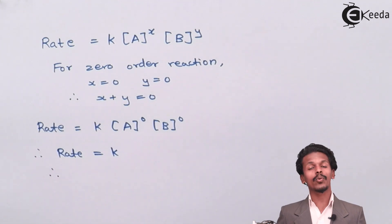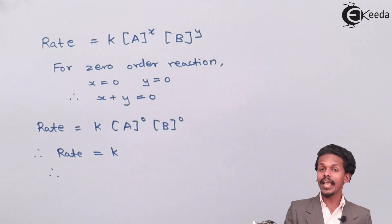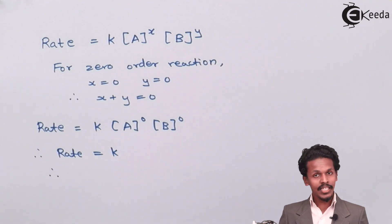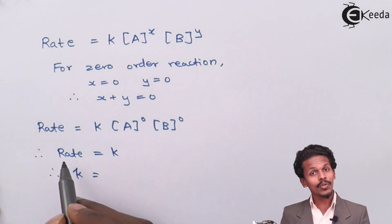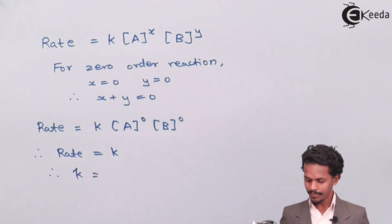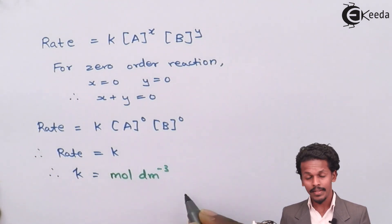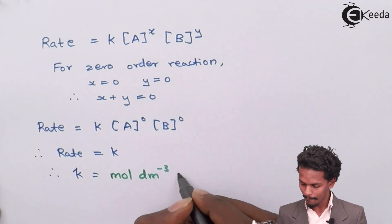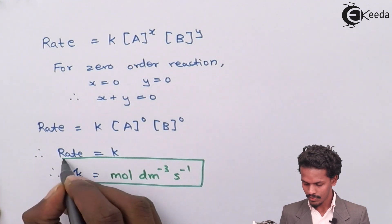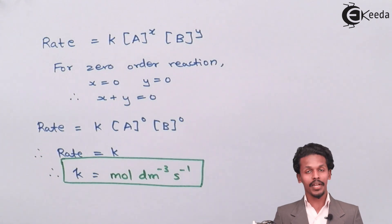Since we need to calculate the unit of rate constant, and k equals the rate of reaction, the unit of k is the same as the unit of rate, which is moles per dm³ per second. This is the unit of the rate constant for a zero-order reaction.